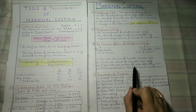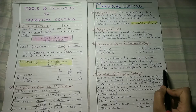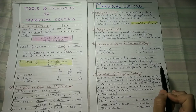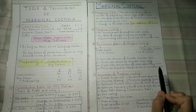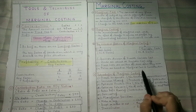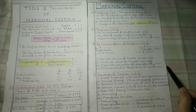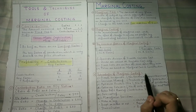The third point is that fixed costs are written off as soon as they are incurred. As I told you earlier, in marginal costing fixed cost has no retained value — we completely ignore it. As soon as fixed cost is incurred, in the marginal costing technique it is immediately written off.